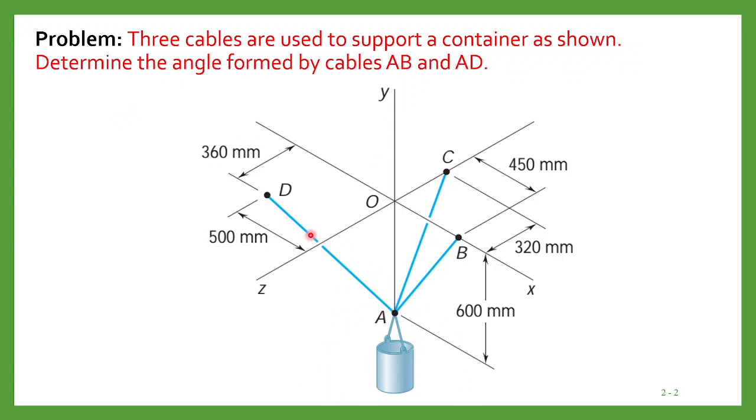There are three cables: AB, AC, and AD. These three cables are used to support the container. We have to determine the angle formed by cables AB and AD. What is the angle they will form?